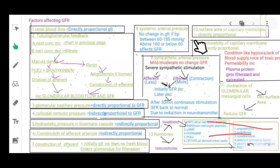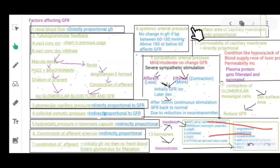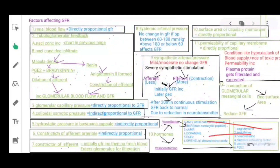Eighth: systemic arterial pressure — if blood pressure is between 60 to 180 mmHg, there is no change in GFR. However, if blood pressure is above 180 mmHg or below 60 mmHg, it will definitely affect the GFR.